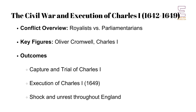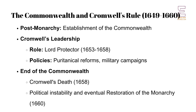The Civil War was a complex and multifaceted conflict involving not just the Royalists and Parliamentarians, but also various religious and regional factions. The war resulted in significant social and political upheaval, ultimately leading to the trial and execution of Charles I in 1649. This period also saw the emergence of radical political and religious ideas as people grappled with the profound changes taking place.